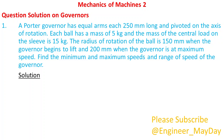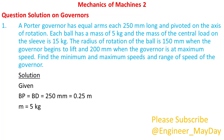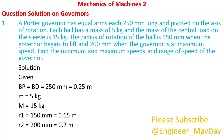Solution. Given: BP equals BD equals 250 millimeters equals 0.25 meters. Mass of ball equals 5 kilograms. Mass of sleeve equals 15 kilograms. R1 equals 150 millimeters equals 0.15 meters. R2 equals 200 millimeters equals 0.2 meters.